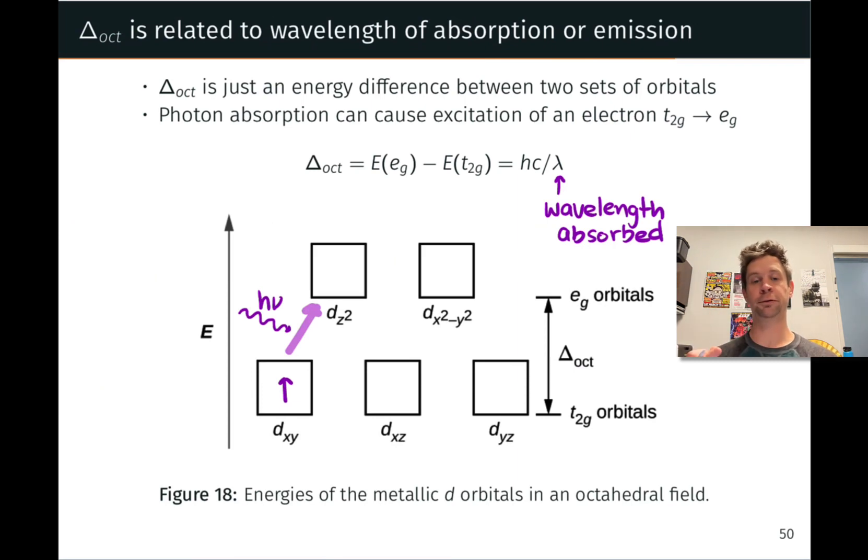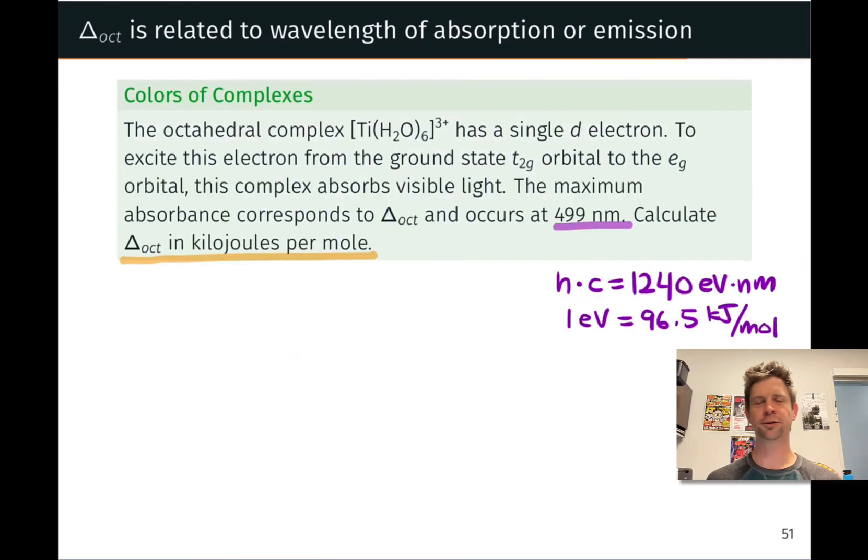Now we've seen how the crystal field splitting is associated with the energy gap between orbitals and that's associated with an absorption wavelength. Let's put this understanding into practice with this practice problem. Here we're looking at the octahedral complex hexa-aquo-titanium-3, with a single d electron. It's a D1 complex. We can excite this electron from the T2G to the EG level with visible light and the maximum absorbance occurs at 499 nanometers. This is the wavelength of light at which the absorption is at a maximum, indicating that this corresponds to the energy gap between the T2G and EG levels. What we want to know is delta oct in kilojoules per mole.